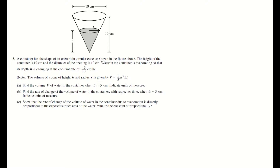What's nice about questions on the AP exam is if you're going to use a geometric formula, they'll give it to you. So we see that the volume of a cone is 1/3 π r² h — so that's nice. And then when I see question A, where it says find the volume V of water in the container when h equals 5, that's really nice because all they're asking is for the volume of a cone, and they give me the formula.